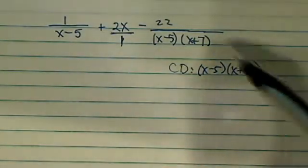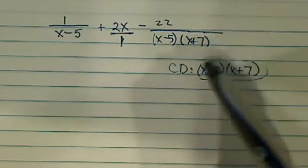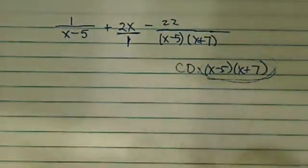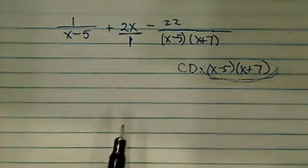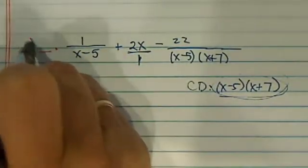Okay, so let's get started. Basically, we're going to get each term, the denominator of each term, turn it into this one. So for the first term, what we're missing is this term, x plus 7.